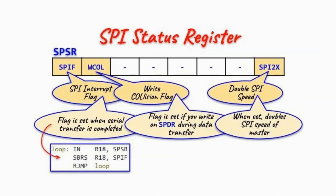Next, we have the status register, which contains the SPIF flag — the interrupt flag. This flag is set when the serial transfer is completed. Inside the assembly code, we can use this indefinite loop to check the status of the flag. The status register also has the write collision flag, which will be set when data is written to the data register during the data transfer process. There is also a bit that, when set, will double the SPI speed of the master device.